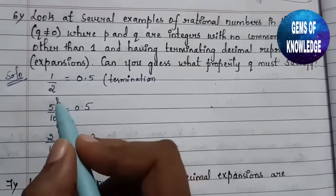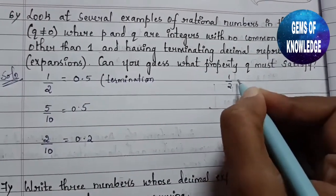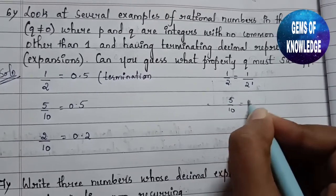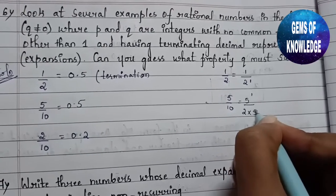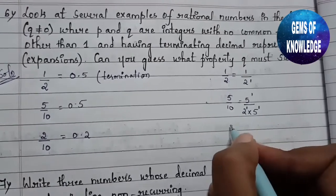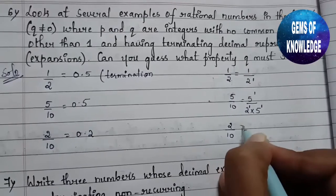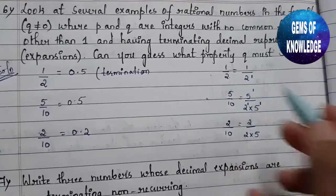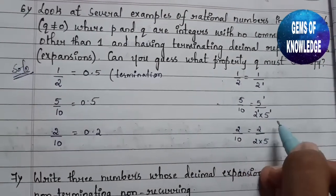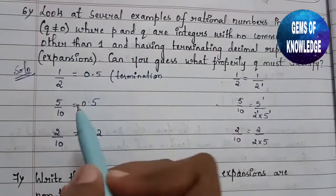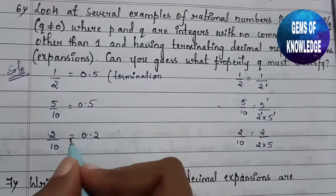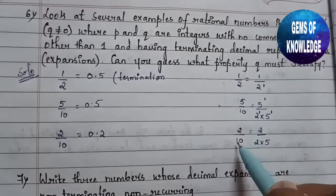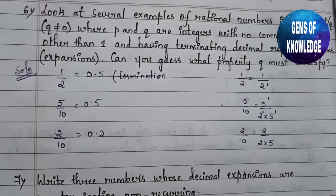Looking at these examples using prime factorization: 1/2 can be written as 1 over 2^1. Then 5/10 can be written as 5^1 over (2^1 × 5^1), since 10 = 2 × 5. And 2/10 can be written as 2 over (2 × 5). Everywhere you can see the prime factorization — the factors of 10 are 2 and 5. So q here (which is 2 or 10) satisfies the property of prime factorization.